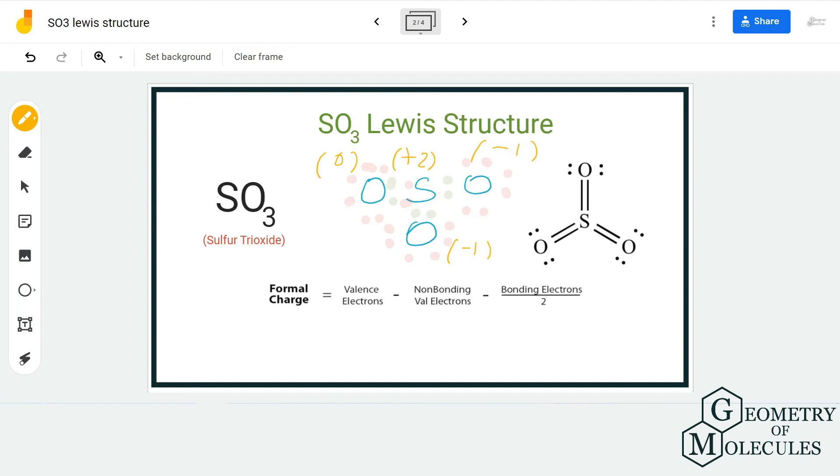Now someone might argue that this is correct because minus one, minus one, and plus two, the charges are balanced. But in chemistry we generally try to go for structures in which formal charges are as close to zero as possible.